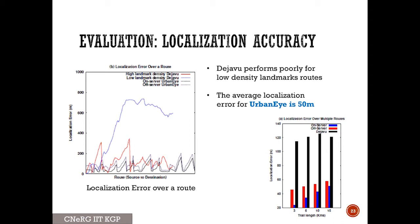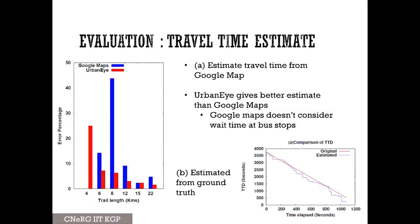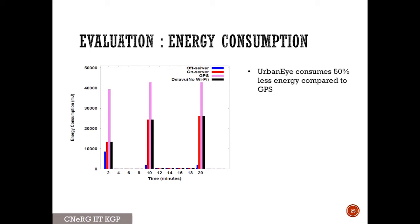Here we show the localization accuracy. Against the baseline called Deja Vu, we compared our framework and observed that the localization error is pretty small compared to the baseline algorithm overall. Here we show the travel time estimation using two different baselines. One is Google Maps — given a pair of locations, we show that against Google Maps our system performed reasonably well, and also in terms of ground truth real travel time. Finally, in terms of energy, since we are not using GPS too often, it consumes significantly less energy.